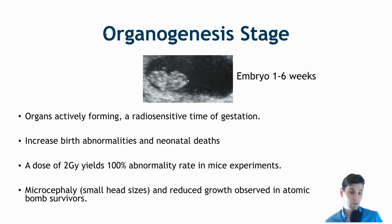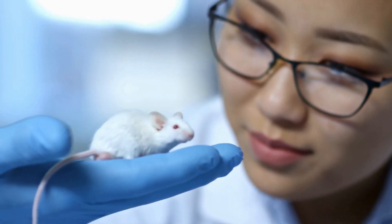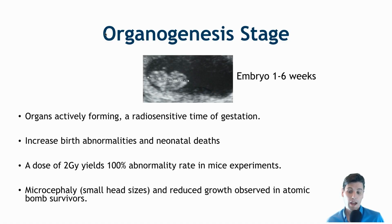In the organogenesis stage — a few weeks into gestation — the organs are actively being developed, and during that phase the embryo is relatively radiosensitive, especially regarding birth abnormalities and neonatal deaths. A dose of 2 gray in mice experiments caused 100% abnormality. Microcephaly, or small head size, and reduced growth have been the effects most commonly seen in atomic bomb survivors who received a radiation dose during this critical time.